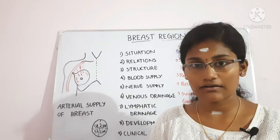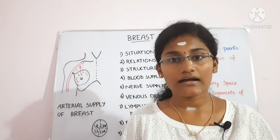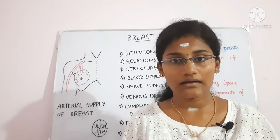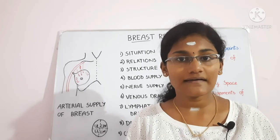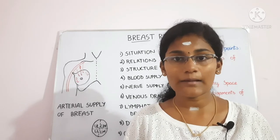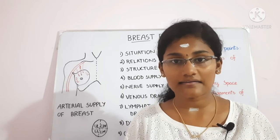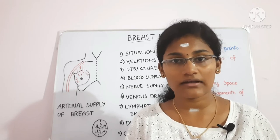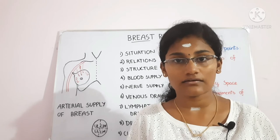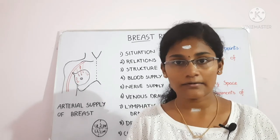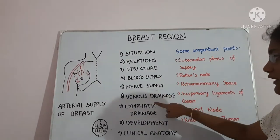The breast is highly vascular. The veins follow the arteries, converging toward the nipple to form an anastomotic venous circle, then dividing into deep and superficial sets. The deep set drains into the axillary and posterior intercostal veins, while the superficial set drains into the posterior intercostal vein.